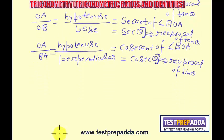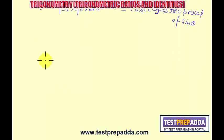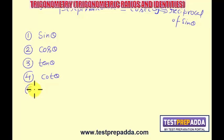Got the idea? So we have defined here six trigonometric functions. Number 1: sin theta. Number 2: cos theta. Number 3: tan theta. Number 4: cot theta. Number 5: sec theta. Number 6: cosec theta. Got it? Sine of the angle, cosine of the angle, tangent of the angle, cotangent of the angle, secant of the angle, cosecant of the angle.